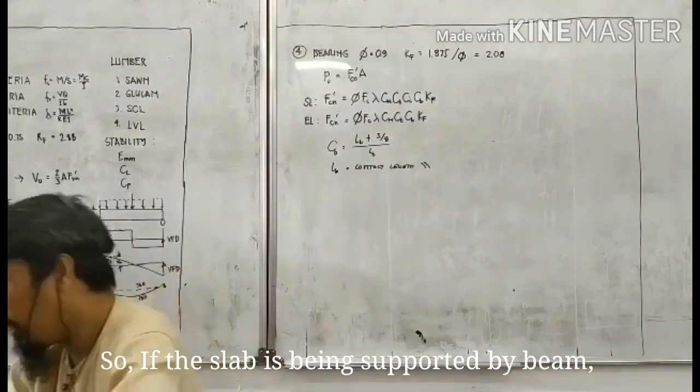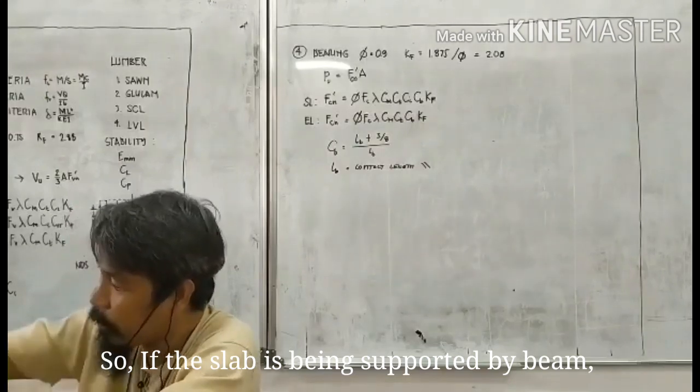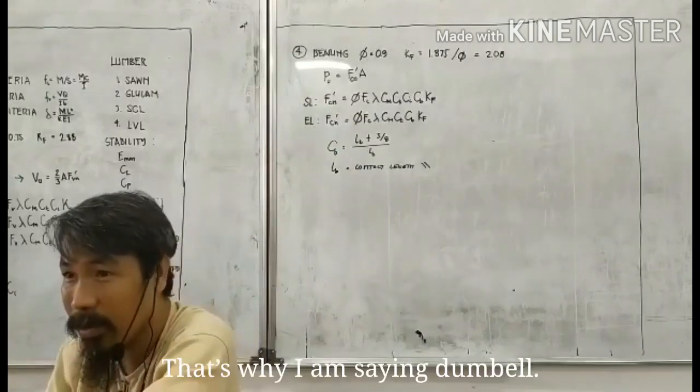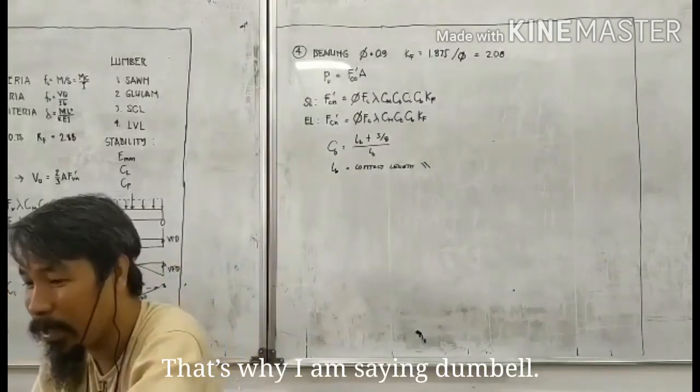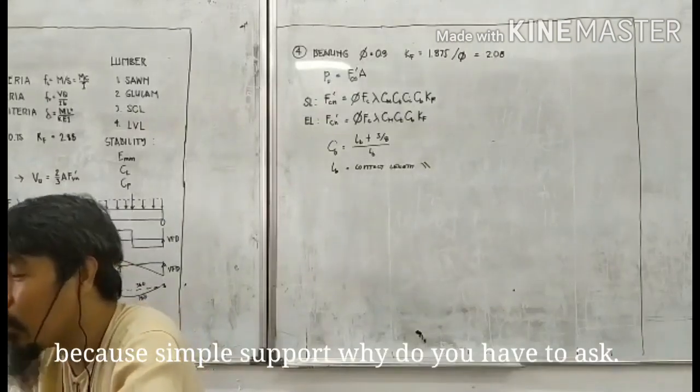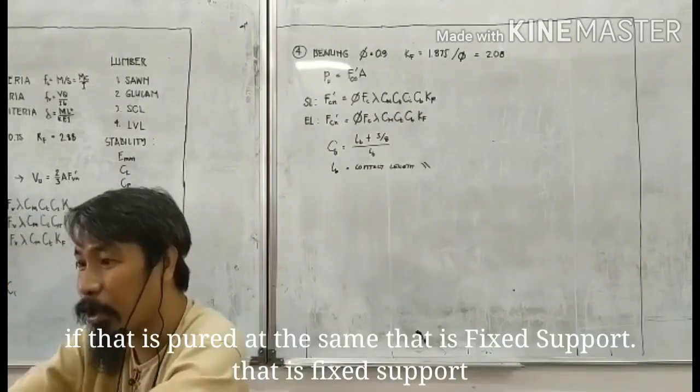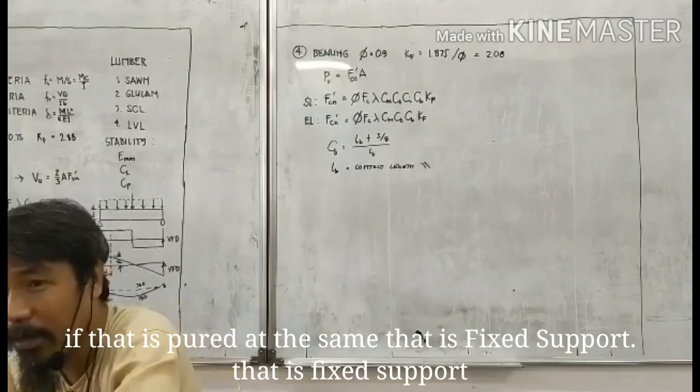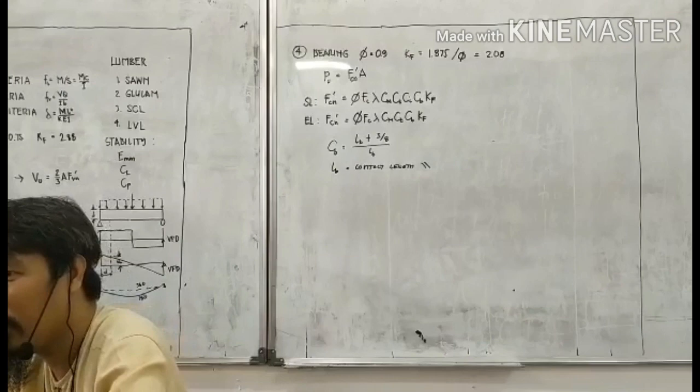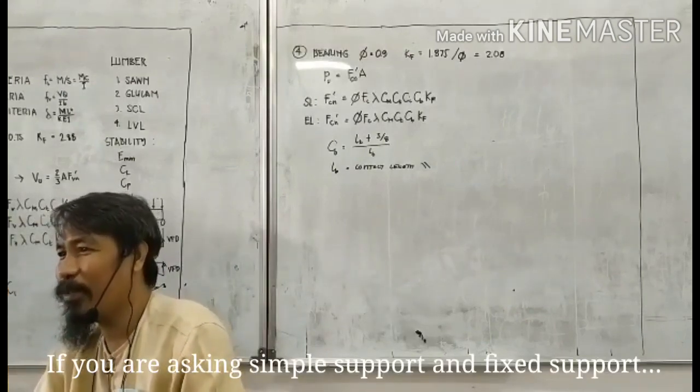So if the slab is being supported by a beam, that is what? Simple support. That's why I am saying double. Because simple support, what do you have to ask? This is simple support. If that is pure, at the same that is fixed support, that is fixed support. You are asking simple support is fixed support.